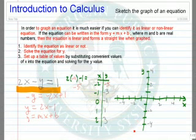negative 2, negative 5; negative 1, negative 3; 0, negative 1; 1, 1; and 2, 3. You will notice that these actually form a straight line.